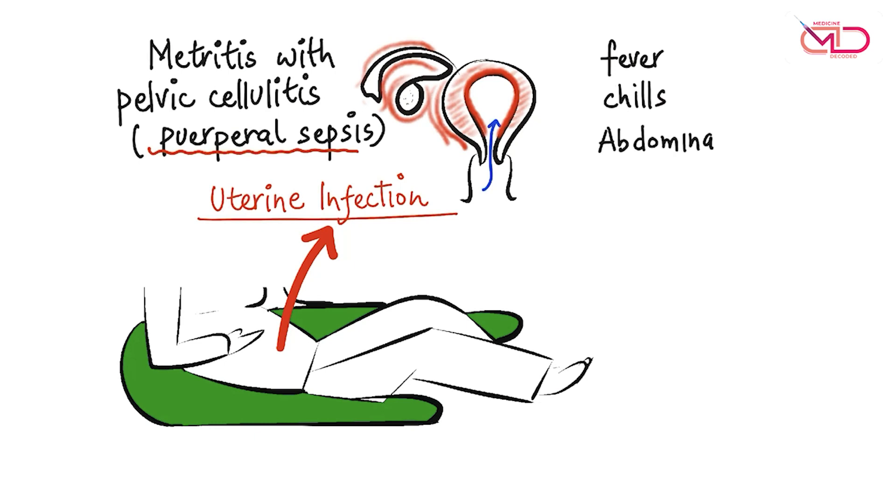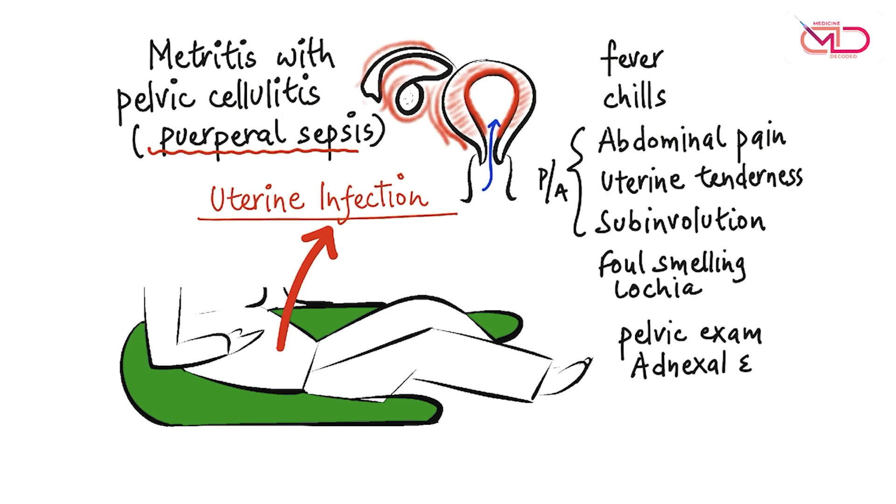Presents with fever, chills, abdominal pain. On examination, there will be uterine tenderness or sub-involution or foul-smelling lochia. Pelvic examination will show adnexal or parametrial tenderness.